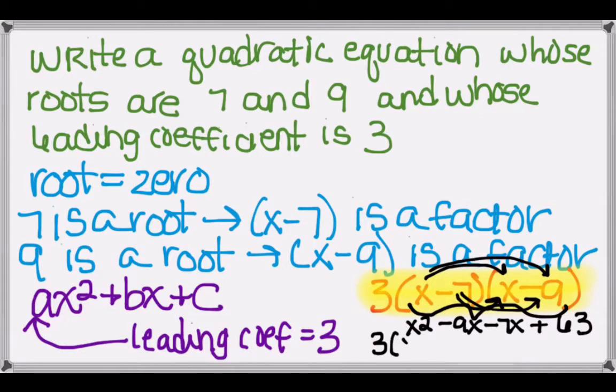Keeping in mind we have the 3 in front, and then I'll simplify the negative 9x and the negative 7x, so we get 3 times (x² minus 16x plus 63).